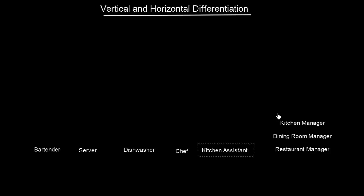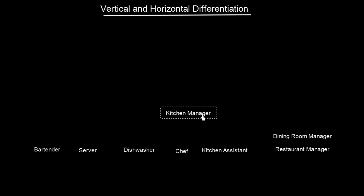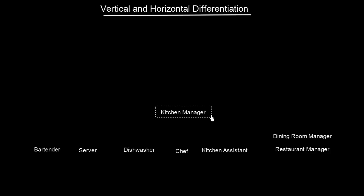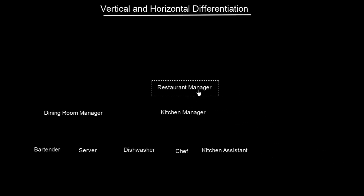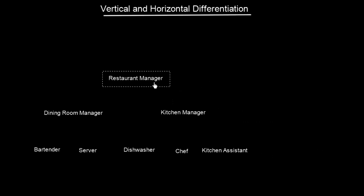Now we already have managers. We have a kitchen manager — we have bartender, server, dishwasher, chef, and kitchen assistant, so the kitchen manager should be somewhere above here. Then we have a dining room manager, somewhere above here. Now we have a restaurant manager, and I would even add one more: owner. You will see why later on.